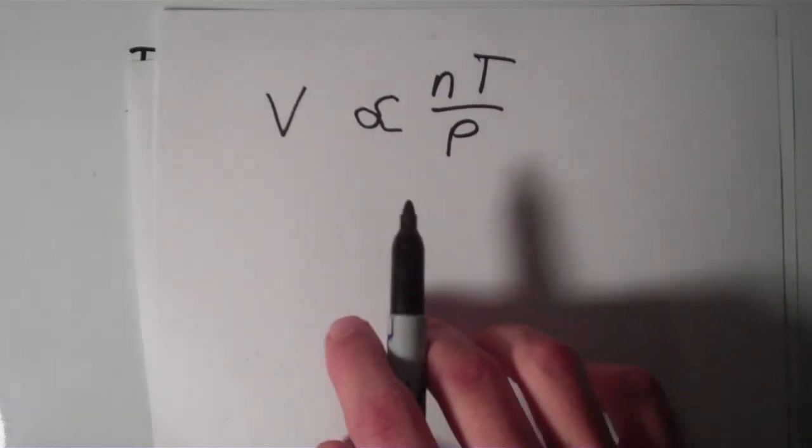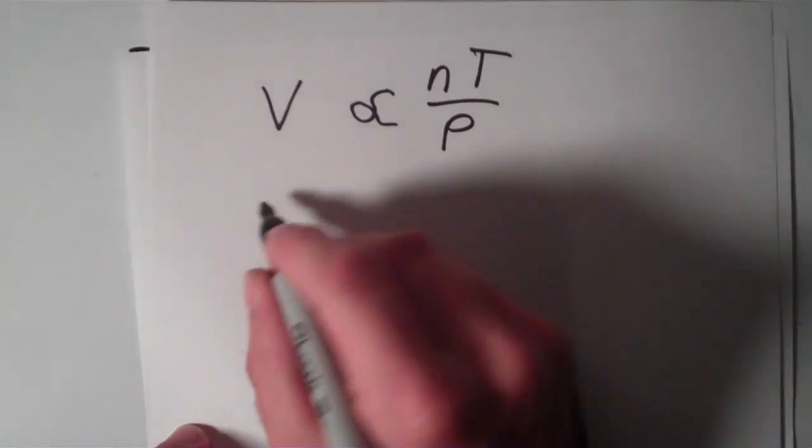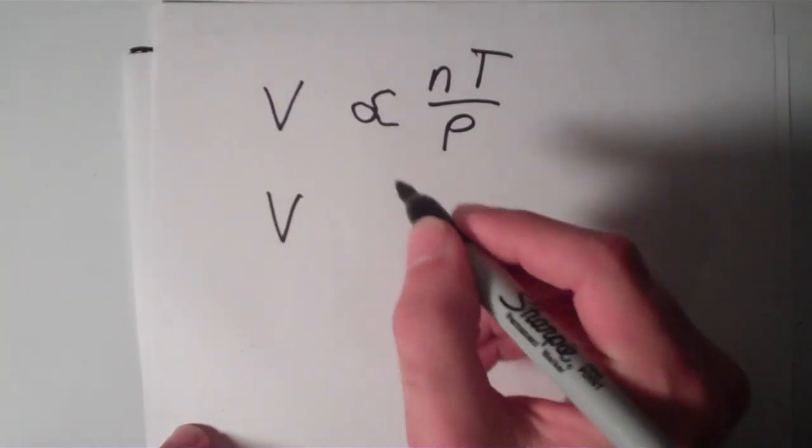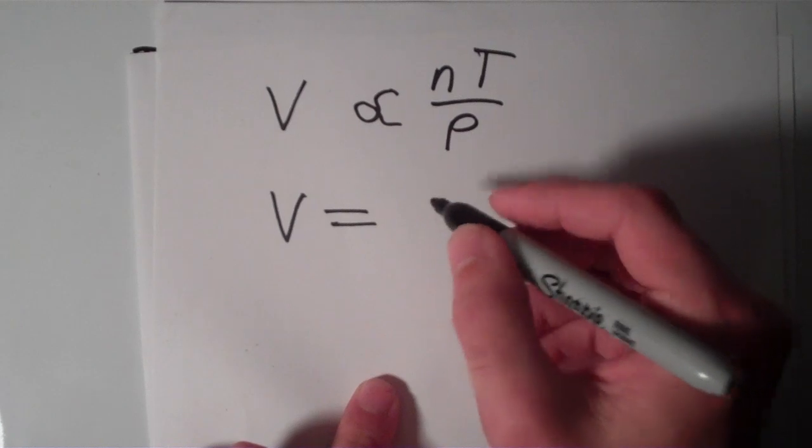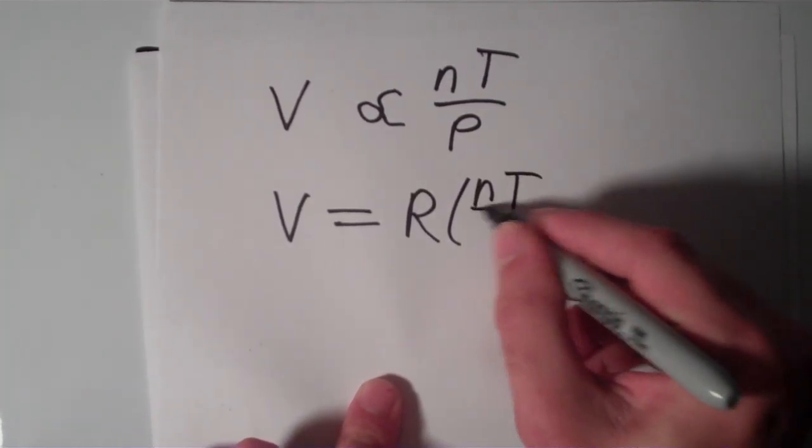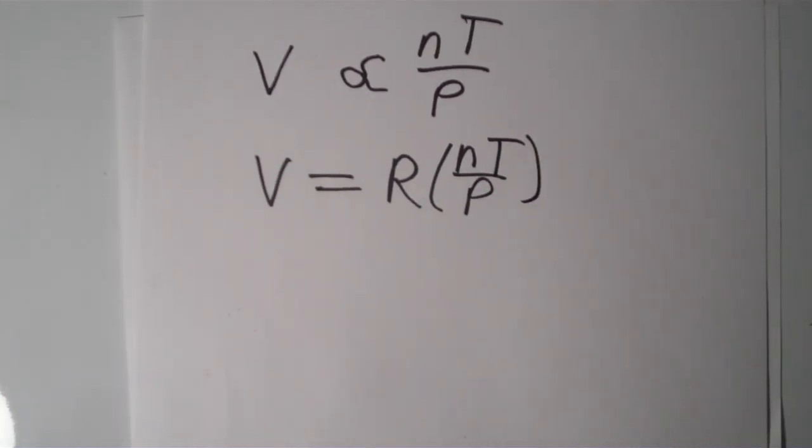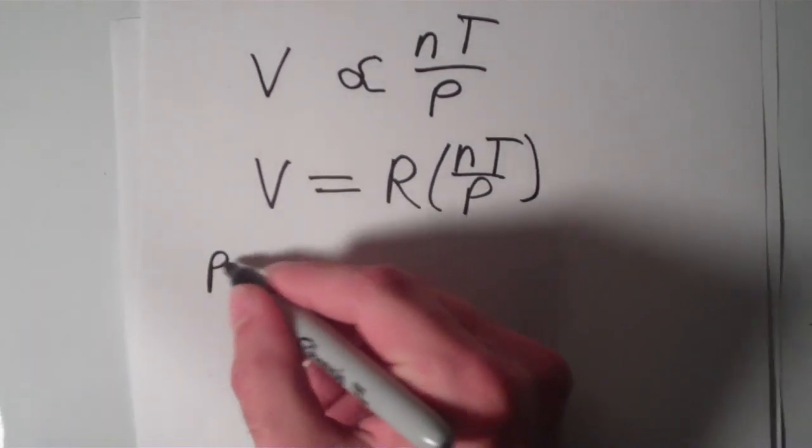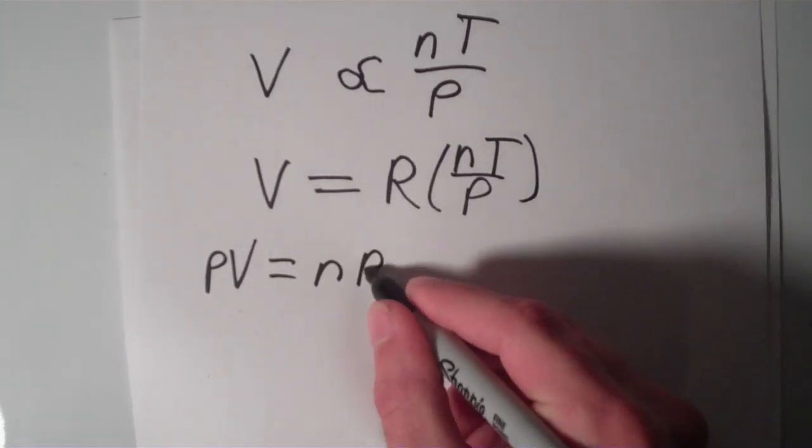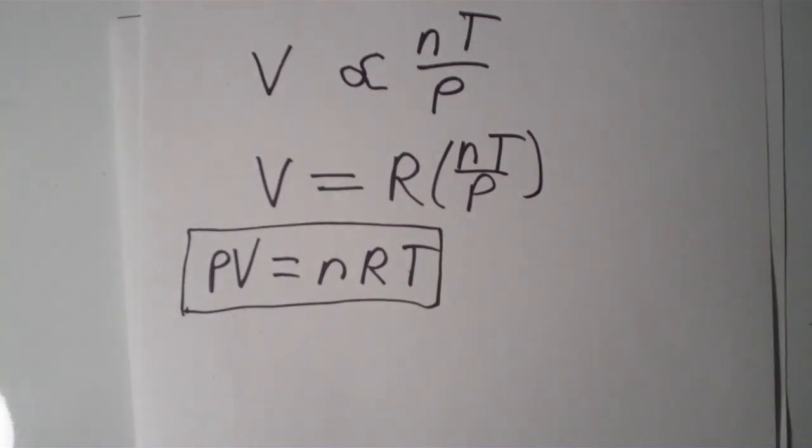So I'm going to get rid of this proportionality and I'm going to turn this into an equation. So if we do that, we'll get that the volume is equal to a constant of proportionality that I'm going to call R times nT over P. If we multiply both sides of the equation by P, we'll get PV equals nRT. That is the common form of the ideal gas law equation.